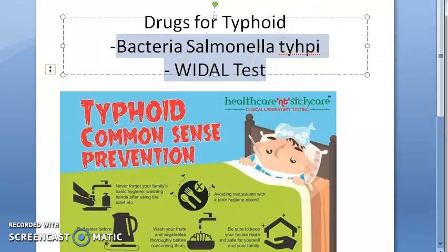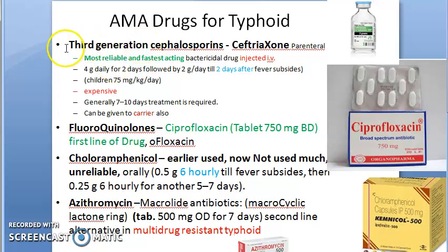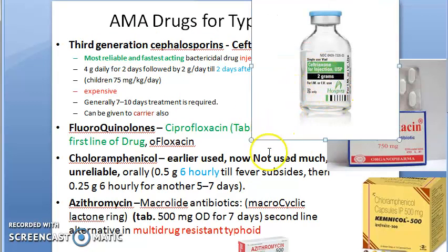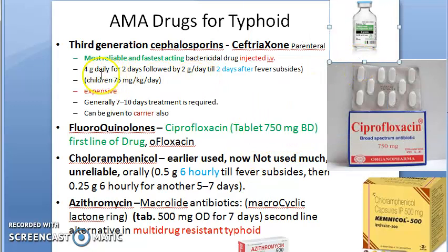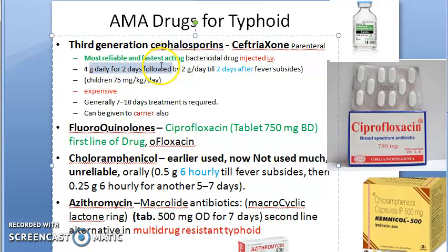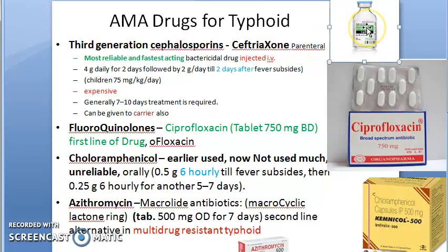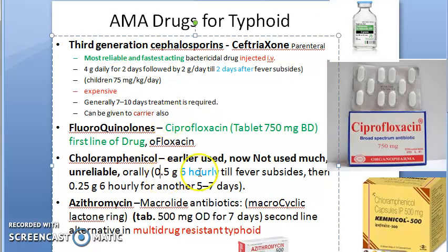Some introduction you can give here. Third generation cephalosporins like ceftriaxone can be given parenterally — injection IV — 4 grams daily for two days, followed by half the dose. It is expensive, and it requires 7 to 10 days of treatment. It can also be given to carriers.